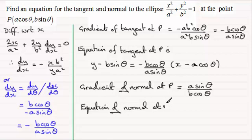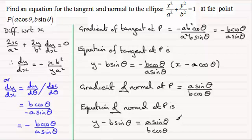and again, it's going to be y minus y1, so it's y minus B sine theta, equals the gradient, which is A sine theta, divided by B cos theta, and that's multiplied by x minus x1, which is A cosine theta.